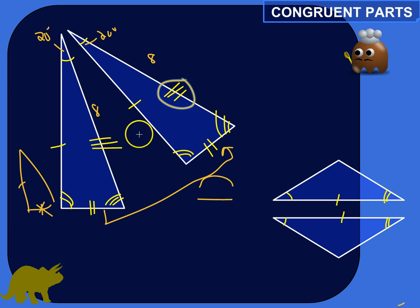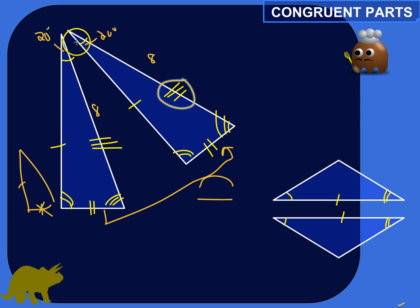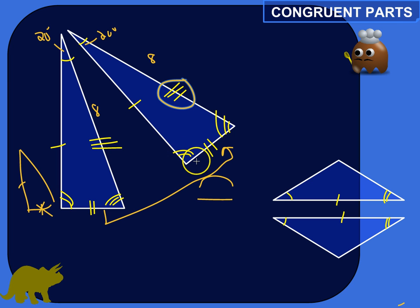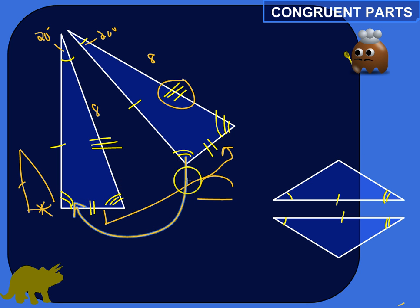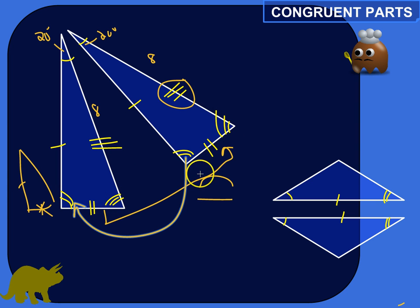The same thing works with the angles. If I want to say that this angle is congruent to this angle, here's my one curve, and I'm also calling this one curve. This angle has a different measurement from this angle, so I'm not going to call it one curve — I'm going to call it two curves. But I'm going to write two curves over here to say that this angle and this angle are congruent, they have the same measurement. And if I need to use a different name, I go up to three curves.